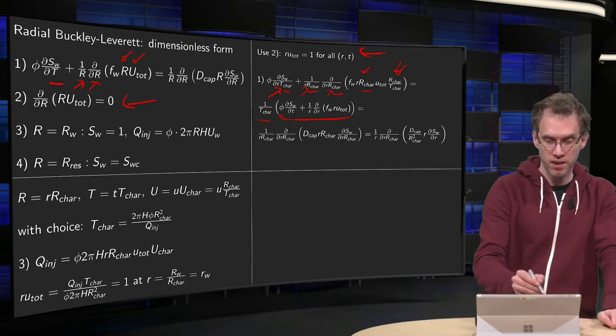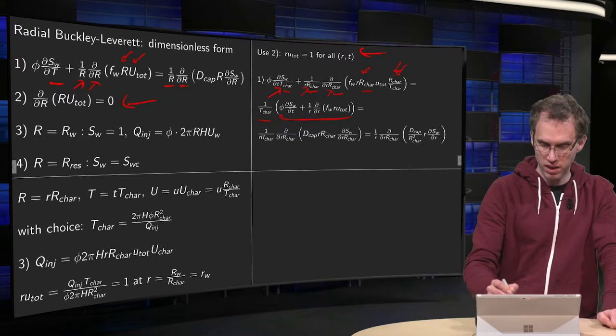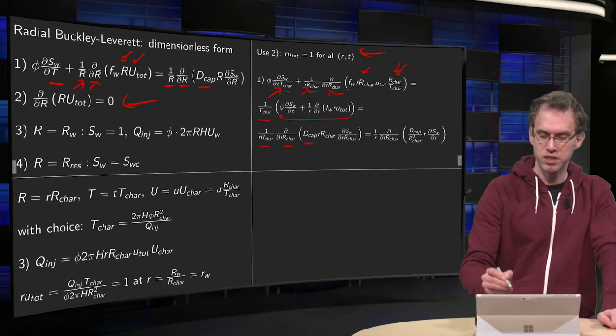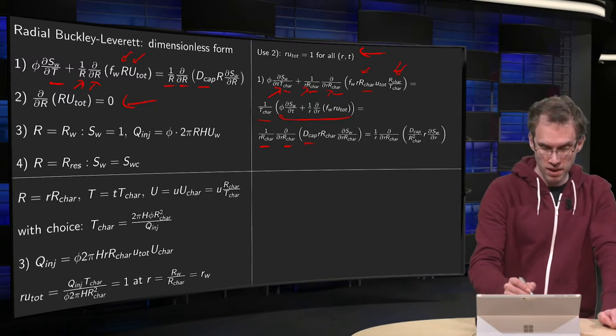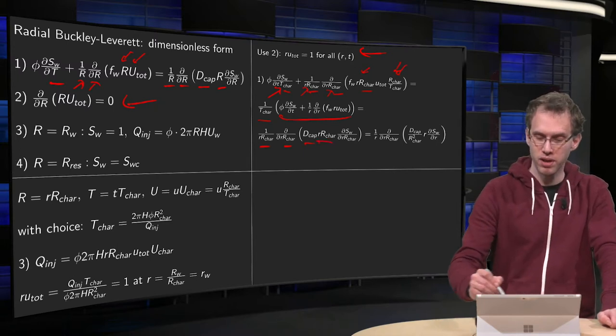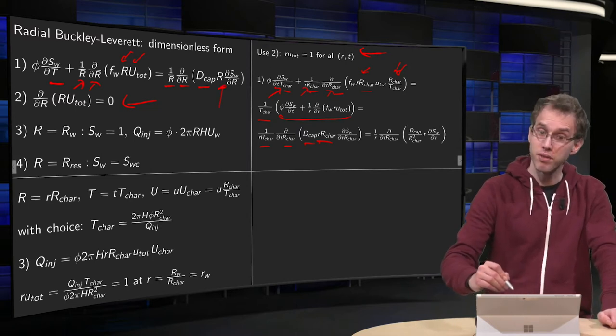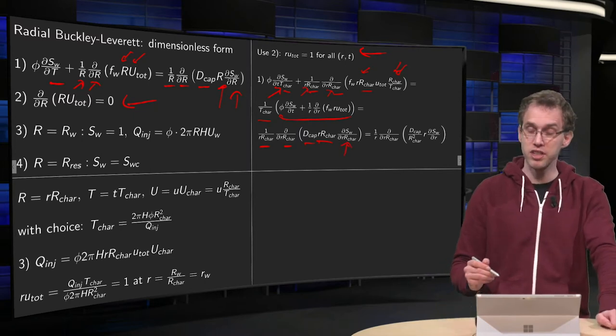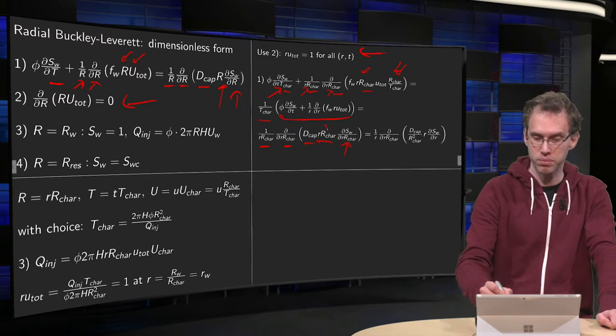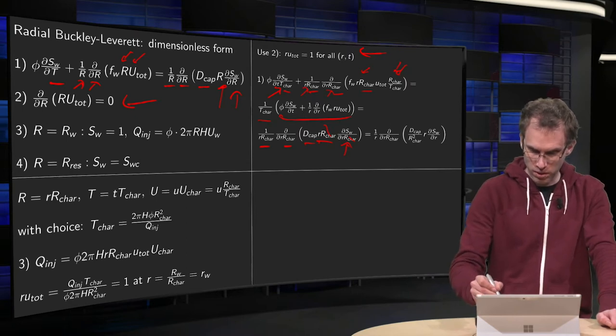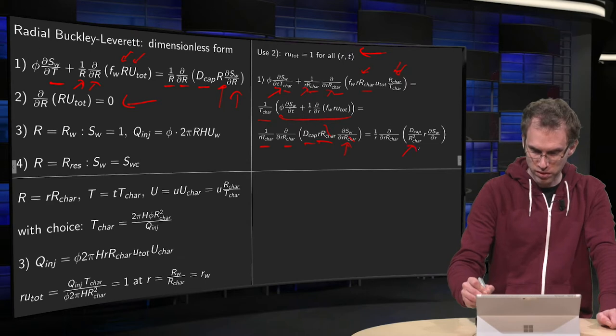Then we move on to the right hand side. We do the same trick. We have a 1 over R and a DDR. So, we get some factors R-characteristics over here. We have a D-cap which contains some dimensions. And we have a small r times R-characteristics for the capital R over there. And for the DDR, we get another factor of R-characteristics. So, some R-characteristics are going to cancel out. For example, this one and this one. But we are left with some rubbish. And 1 over R-characteristics squared, we put it over here.